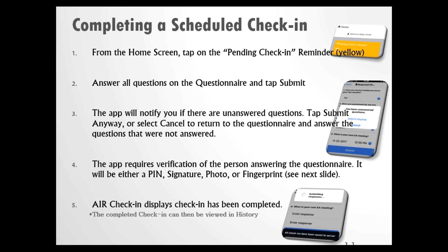The app does require a verification. This means that your supervisor wants to know that you're the person who's actually filling out this questionnaire. You'll have one of at least the following: a PIN number, signature, photo, or fingerprint. Once you hit submit, Air Check-In is going to show you that the check-in has been completed. Notice the banner across the bottom. It's not a bad idea to go ahead and check History to confirm that the check-in has been submitted successfully.